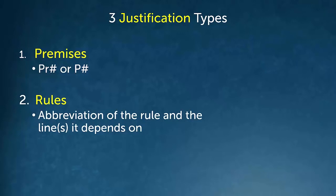When we use a rule, we don't have to write out the entire thing — we just write the short form. Modus ponens is MP, modus tollens is MT, and so on. Then we reference the lines that we used for the rule.